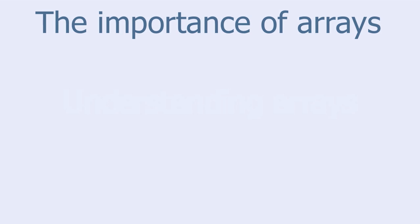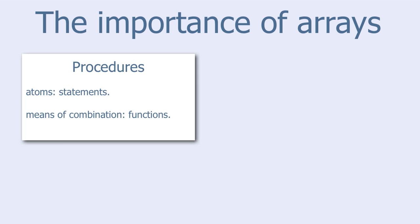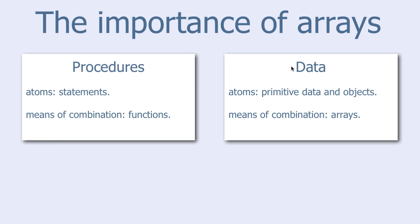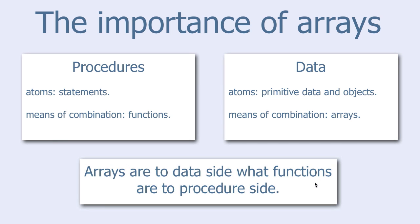The importance of arrays: a program consists of procedures and data. When it comes to procedures, the atoms are simple statements. We can combine several statements into an aggregate using the concept of function. Similarly, when it comes to data, the atoms are primitive data and primitive objects. We can combine several data atoms into an aggregate using the concept of array. So, you could say that arrays are to the data side what functions are to the procedure side. That's how important arrays are.